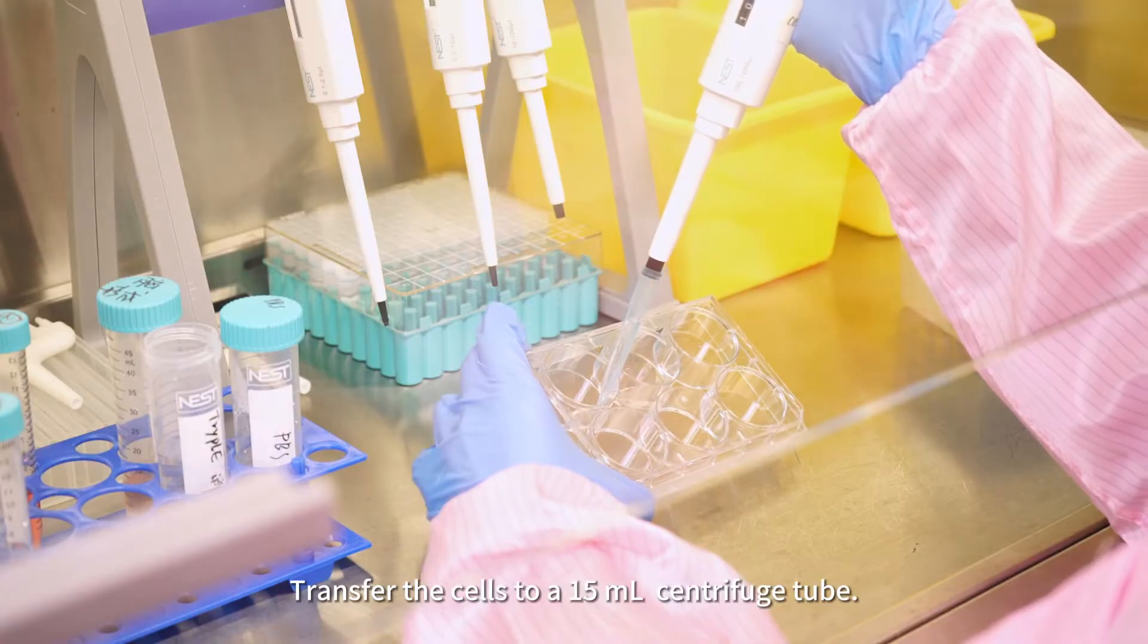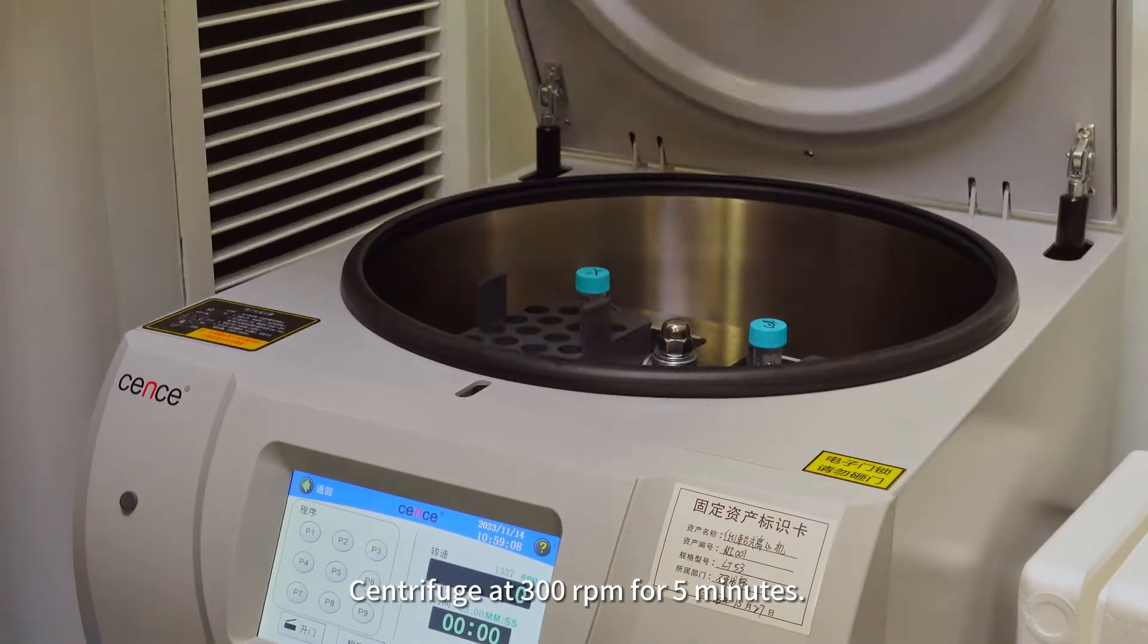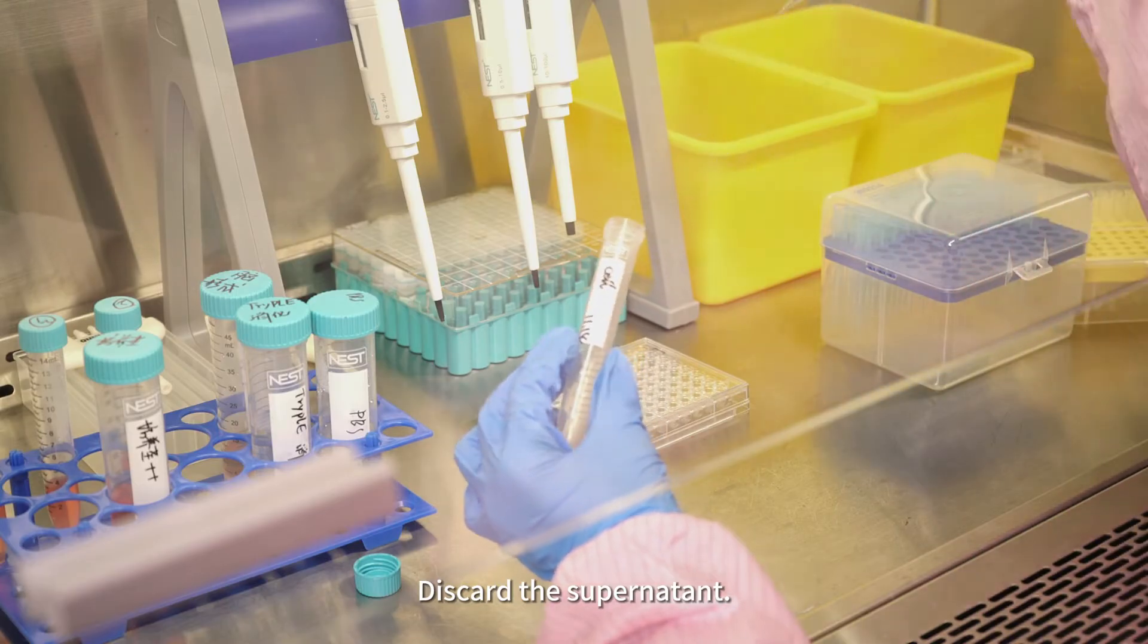Transfer the cells to a 15-milliliter centrifuge tube. Centrifuge at 300 revolutions per minute for 5 minutes. Discard the supernatant.